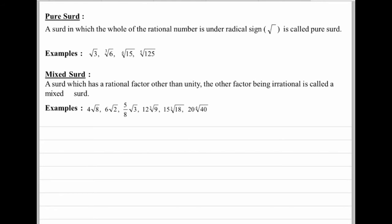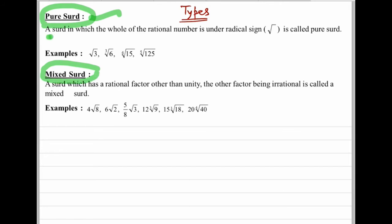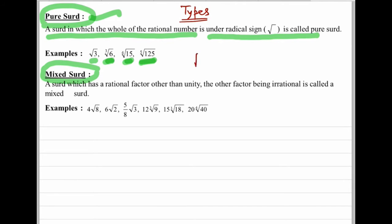In this video we shall discuss the types of SIRDs — how many types are there and what is their importance. The first type is pure SIRD. A SIRD in which the whole of the rational number is under the radical sign is a pure SIRD. For example, cube root of 6, 4th root of 15, and 5th root of 125 — in all these the entire number is under the radical sign. If we write under root of 92 or cube root of 129, these are pure SIRDs.